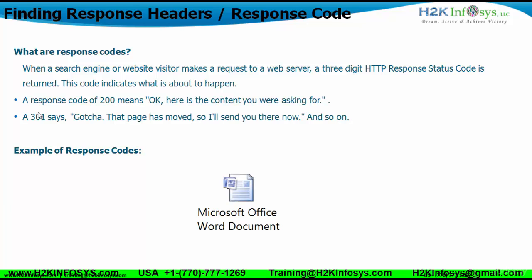You might have requested a particular URL to open. If the URL is present and existing in the web server, it will send you a three-digit HTTP response code stating whether the website can be opened. For example, if you open google.com and the response code from Google's server is 200, that means the URL is correct and existing, and it will open up the Google application in your browser.